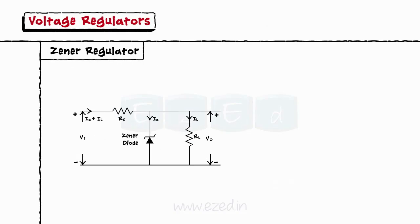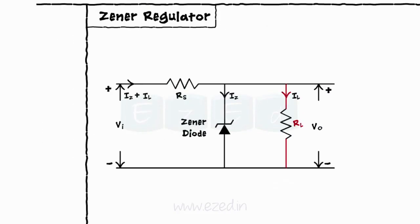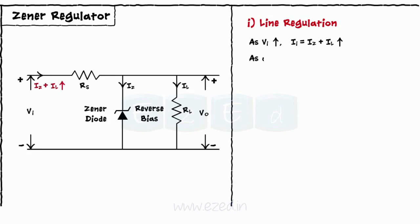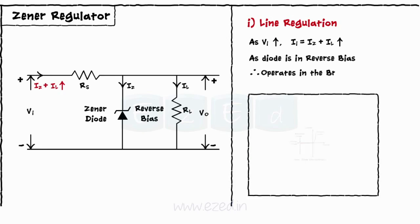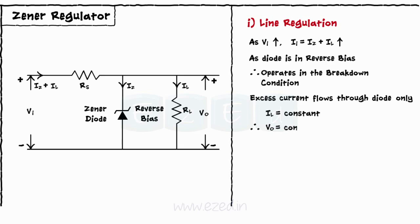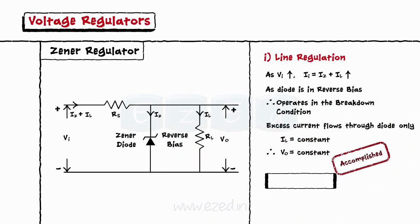A DC voltage regulator using a Zener regulator is shown, where the load is connected across the Zener regulator in parallel. Let's first consider line regulation. Note that the diode is connected in reverse bias. When the input voltage increases, the input current also increases. But the diode, being in reverse bias mode, operates in the breakdown condition. Thus, all the excess current flows through the diode only, and load current IL remains constant. Hence, output voltage V0 also remains constant, accomplishing the task of line regulation.